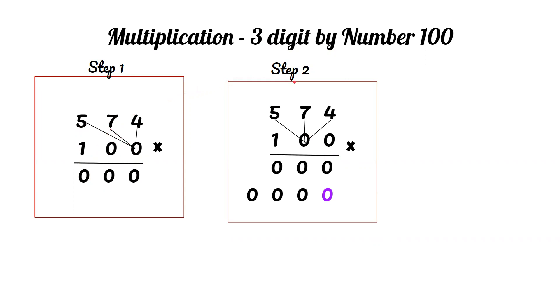Step 2: 0 times 4 equals 0, which we put in the tens space because the 0 we multiplied with is in the tens space. To avoid confusion, we also put a 0 in the ones space. Then we do 0 times 7, which is 0, and 0 times 5, which is 0.